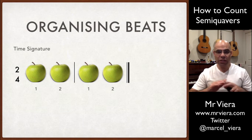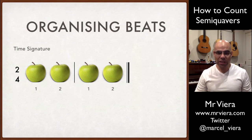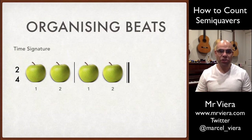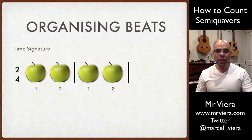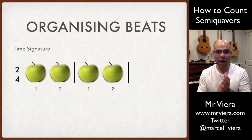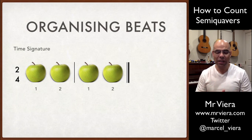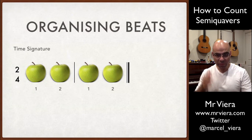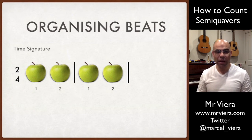At the end of the piece of music we use a double bar line to show that this is the end of the music. So if we were going to count these apples we'd go: one, two, one, two — and that would be the end of it because of the double bar line.